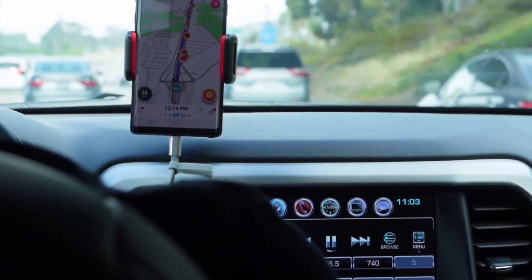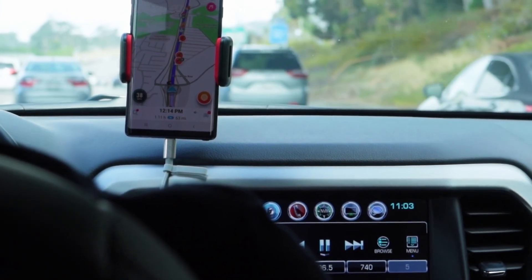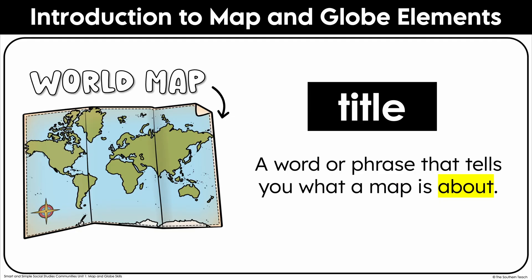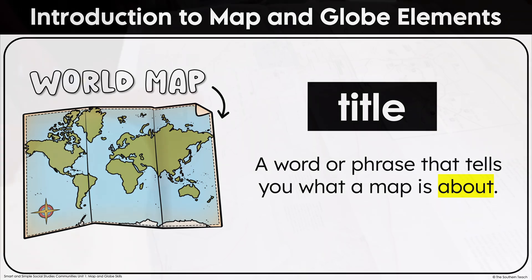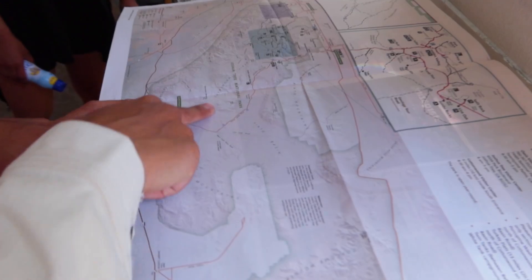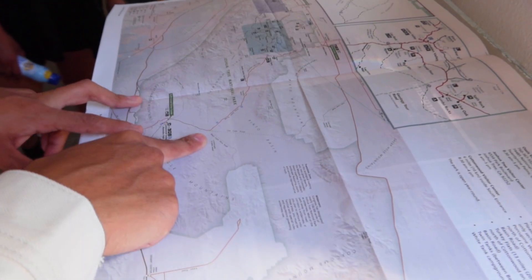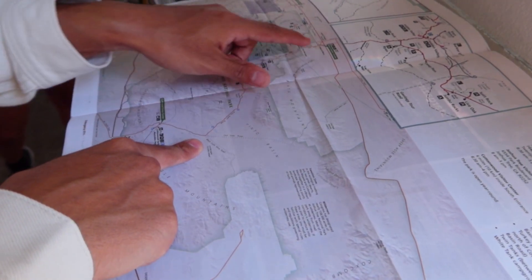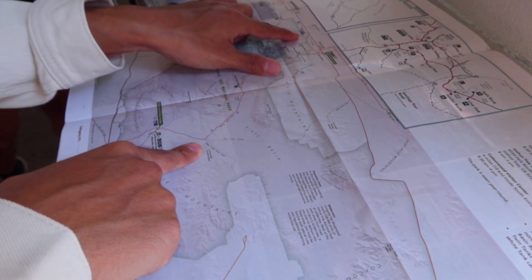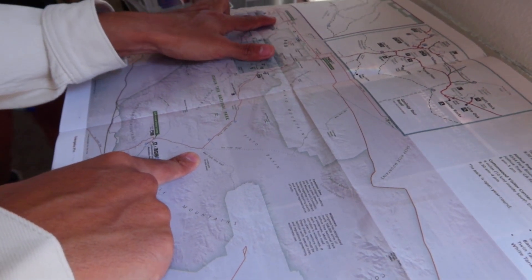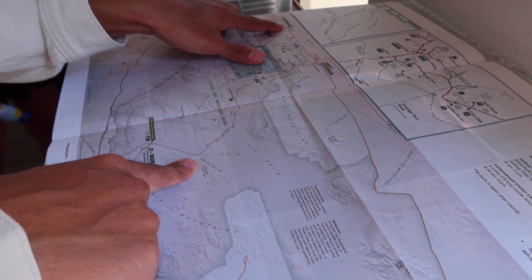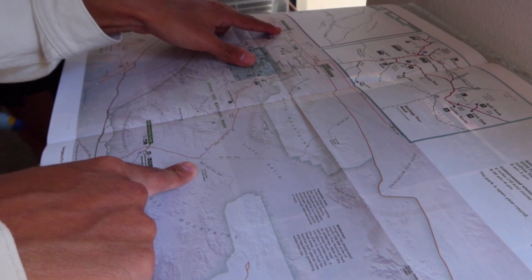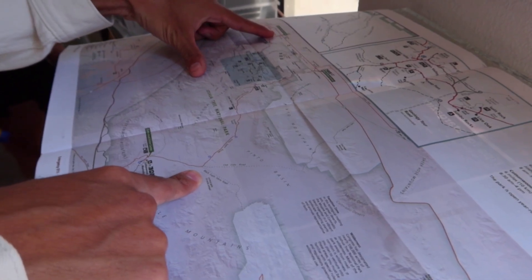However, globes are not as convenient to carry around, which is why we often use maps instead. The title is a word or phrase that tells you what a map is about — this is one of the first things you should look at when reading a map. The title helps you understand if the map is showing a city, a country, a type of landform, or even something special like population density.